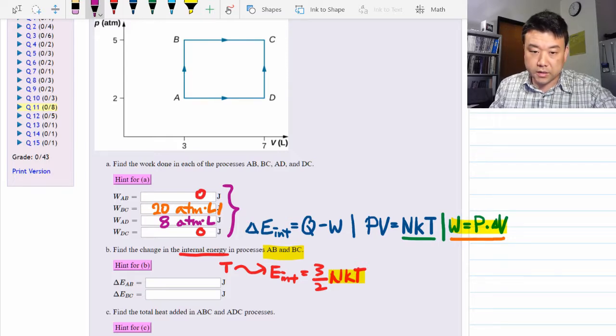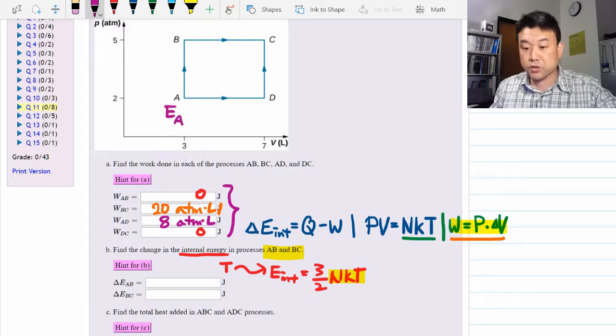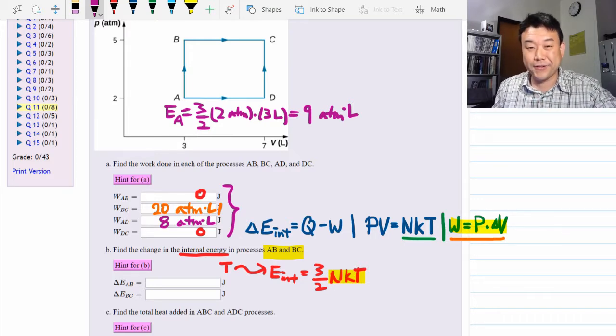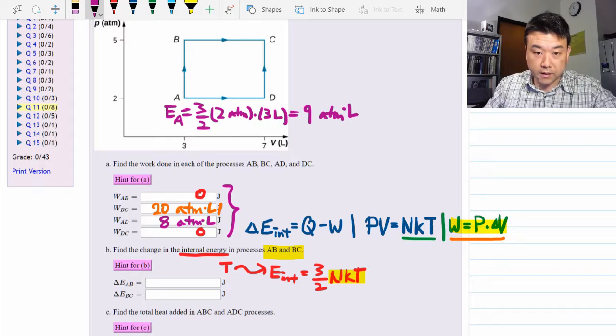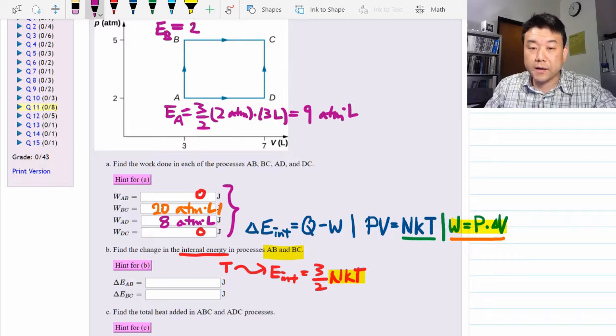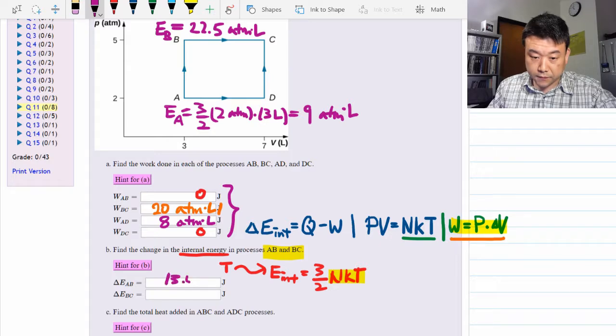So really the internal energy at point A is pressure times volume times three halves, or three halves times pressure, two atmospheres, times volume, three liters, or nine atmosphere liters. Now of course you should calculate this in SI units so that you have your answer in units of joules. We can also calculate internal energy at B. And that's five atmospheres times three liters, divide by two, multiply by three, 22.5 atmosphere liter. So the question asks for the difference in the internal energy, so it's that difference right there. So the difference is 13.5 atmosphere liter. Once again, you should convert this to SI units.